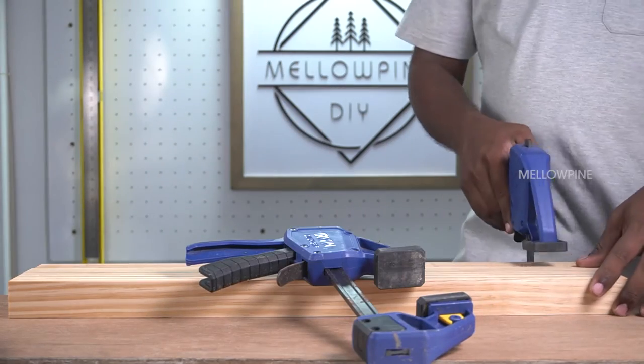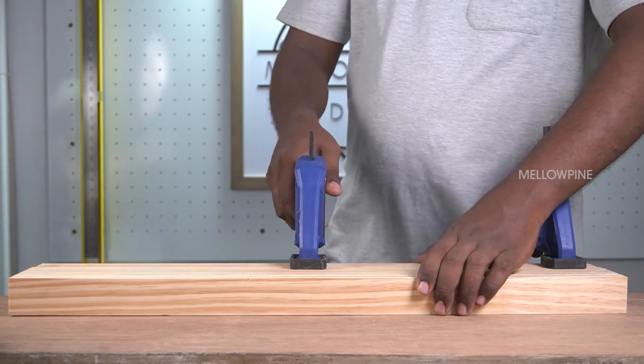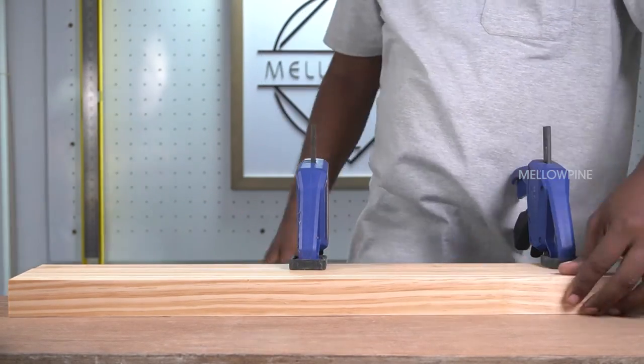Next, clamp down the wood to be cut. Now to guide the circular saw in a straight line, I'm going to be using a rip fence. If you don't have a rip fence, use a straight edge instead.